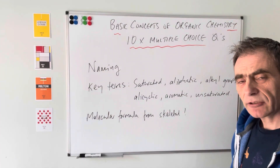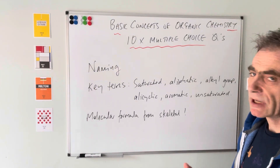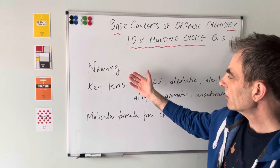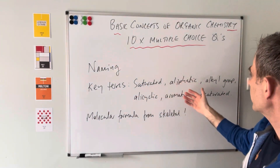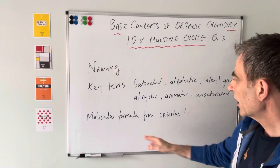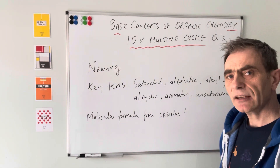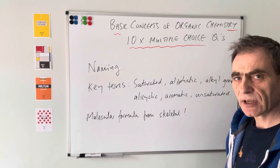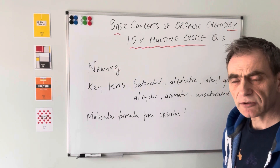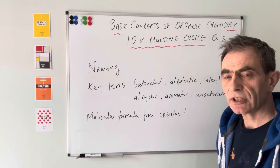The purpose of this video is to go through the answers to 10 multiple choice questions on basic concepts around organic chemistry — things like naming organic compounds, key terms such as saturated, aliphatic, alkyl group, alicyclic, aromatic, unsaturated, and turning a skeletal formula into a molecular formula. I've pulled together 10 multiple choice questions from past papers on a PDF — the link is in the description. Have a go at the questions, then watch the latter part of the video for the answers.